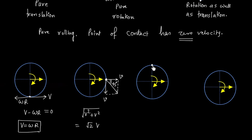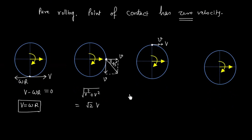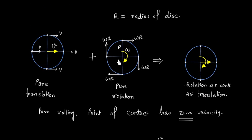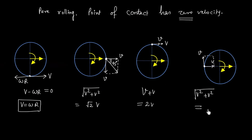Now consider the top point. Due to translation it has velocity v, and due to rotation it also has velocity omega·r equal to v in the same direction, so the total velocity is v plus v, which is 2v. Now consider the other side point: it has velocity v in one direction and omega·r equal to v perpendicular to it. So the resultant velocity is the square root of v squared plus v squared, which is root 2 times v, at an angle of 45 degrees.